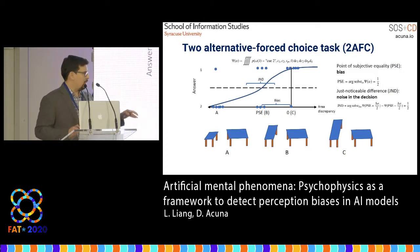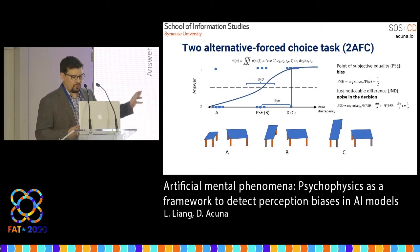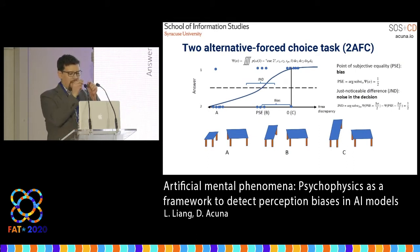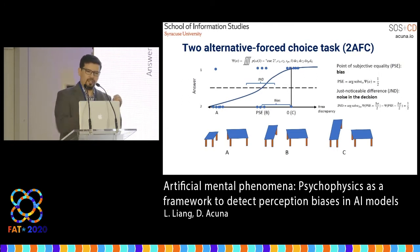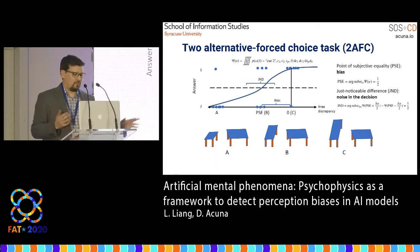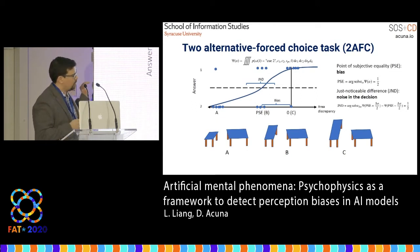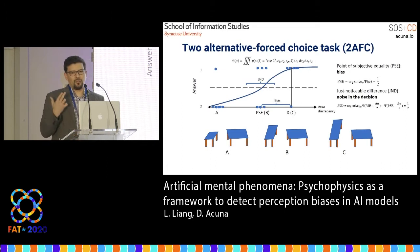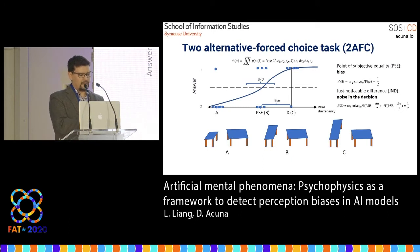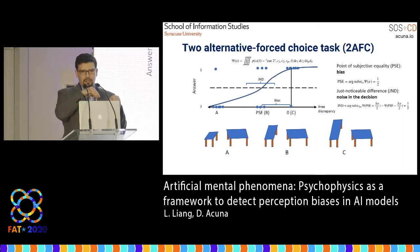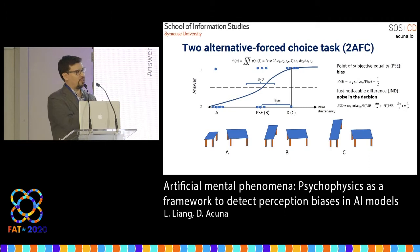People typically judge table one, the one on the left, as bigger than table two even though they are the same size. By modifying the height, we can switch the decision. This produces a function called a psychometric curve, from which we extract two things: the point of subjective equivalence — the point at which both stimuli look the same — and the just noticeable difference, which represents the stiffness or strength of that curve.